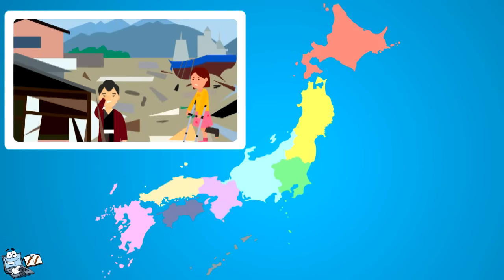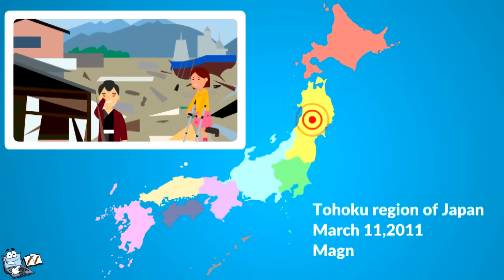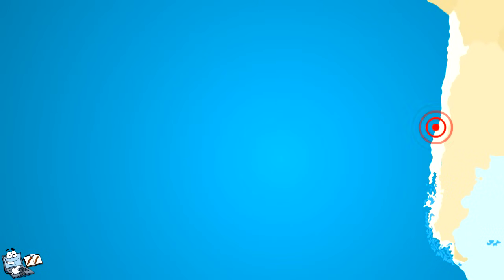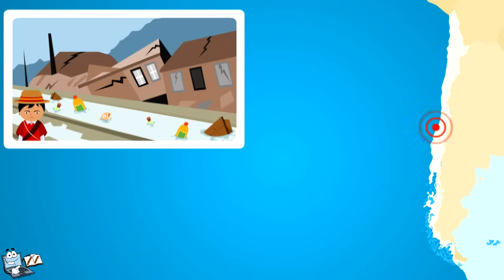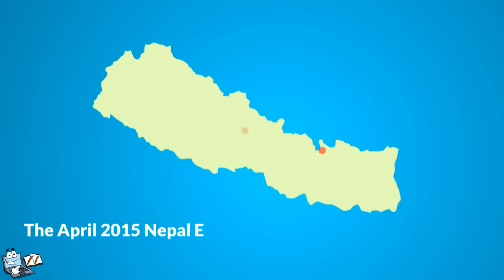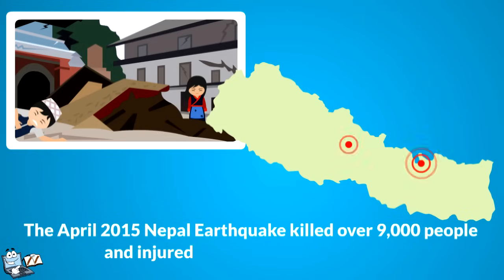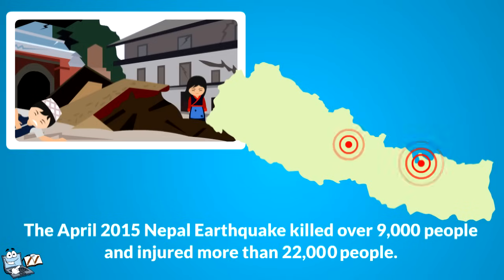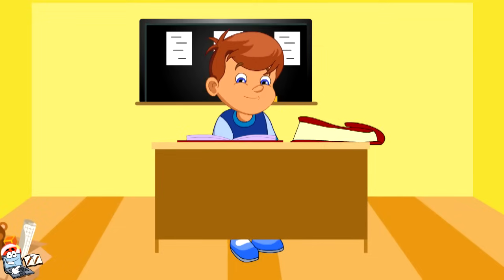The earthquake that hit the Tohoku region of Japan on March 11, 2011 had a magnitude of 9.0 and killed over 16,000 people. A very powerful and devastating earthquake occurred in Valdivia, Chile in 1960. It had a magnitude of 9.5. The April 2015 Nepal earthquake killed over 9,000 and injured more than 22,000 people.